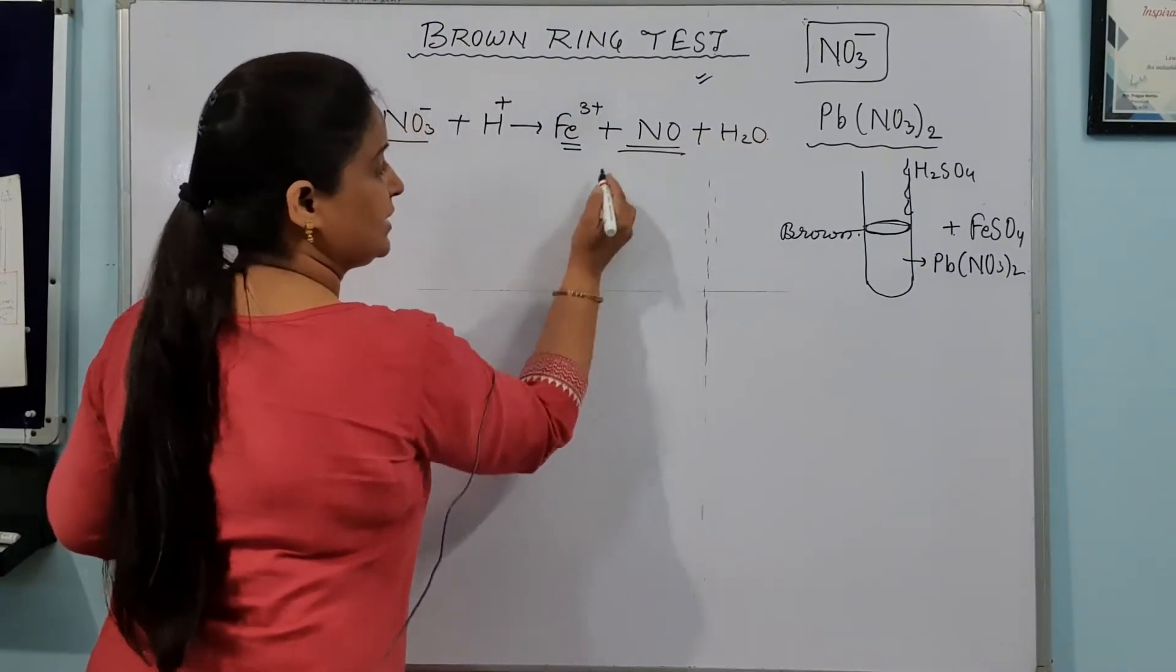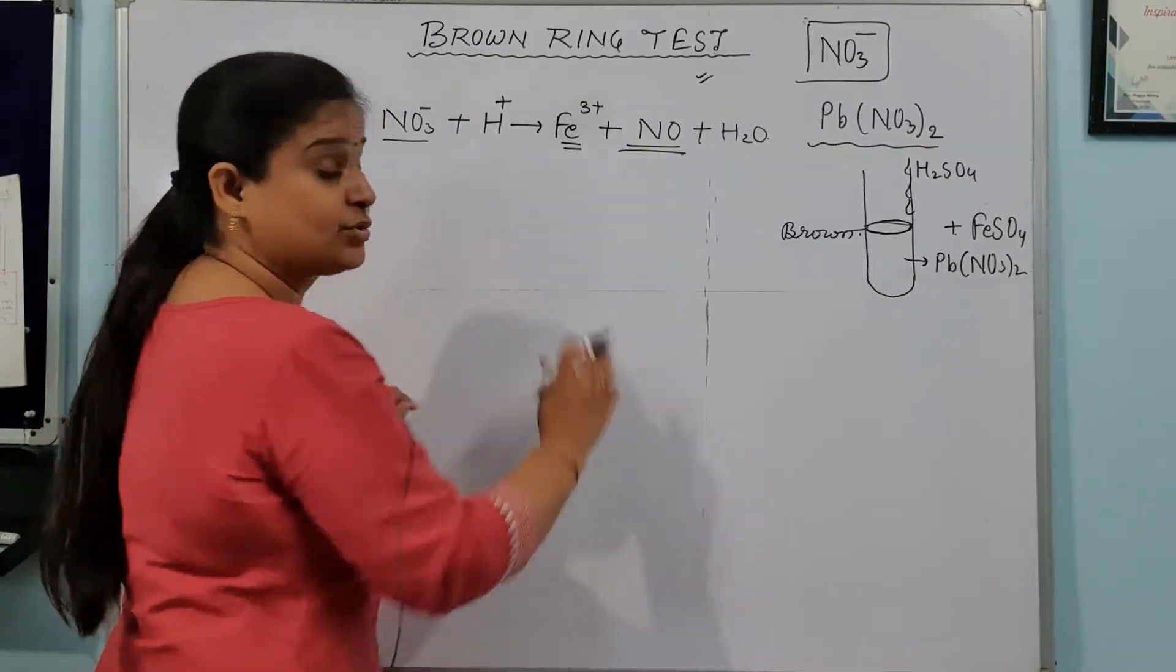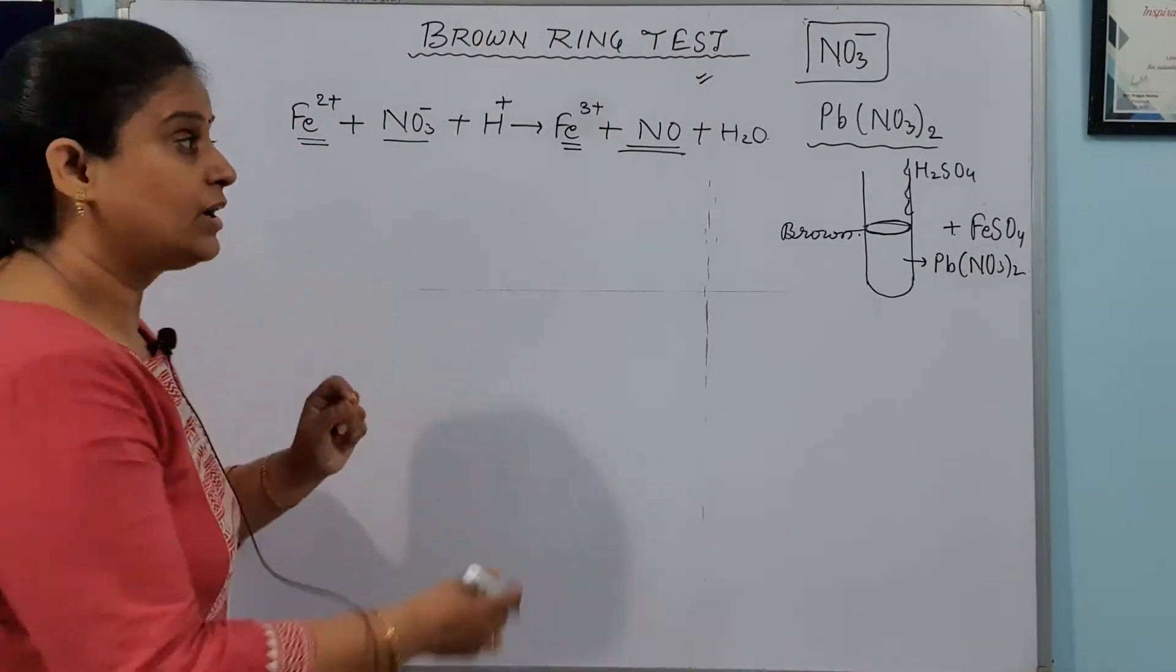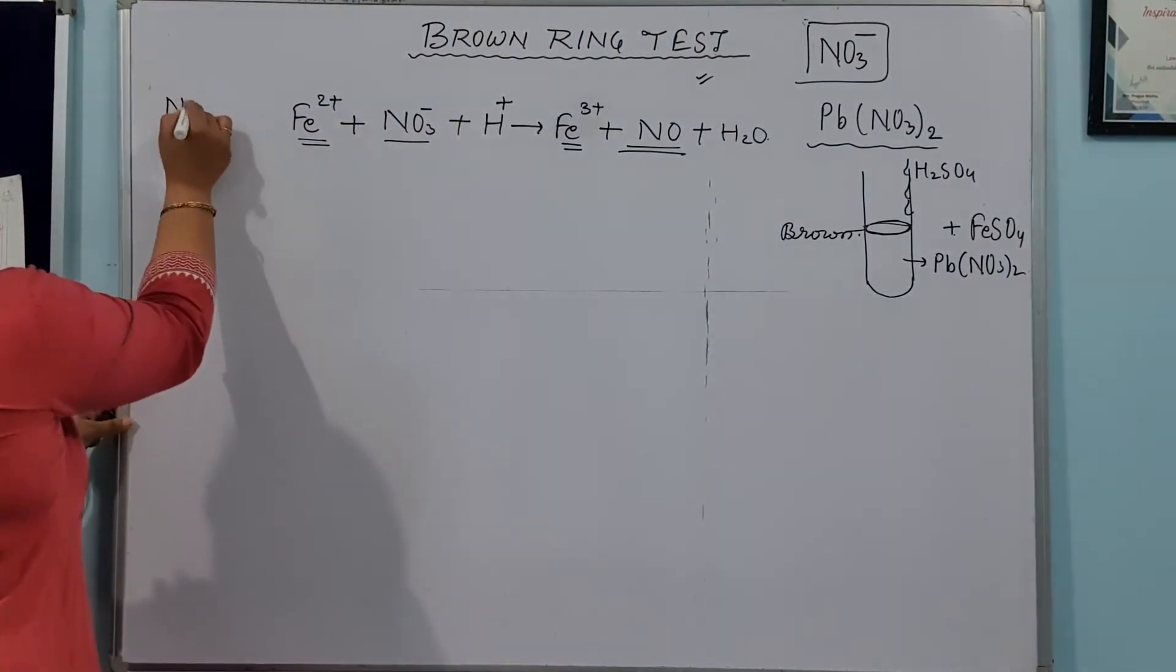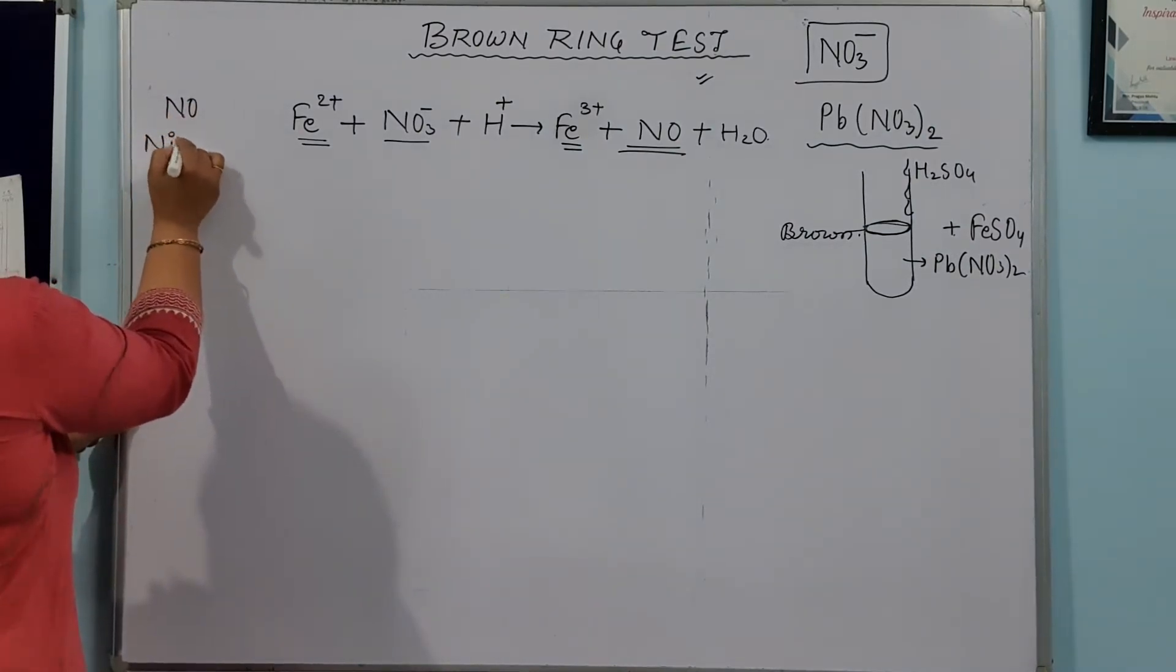Here the compound formed, its chemical name is nitric oxide. But it is going to react as a ligand. And when it works as a ligand, its name becomes nitrosyl.